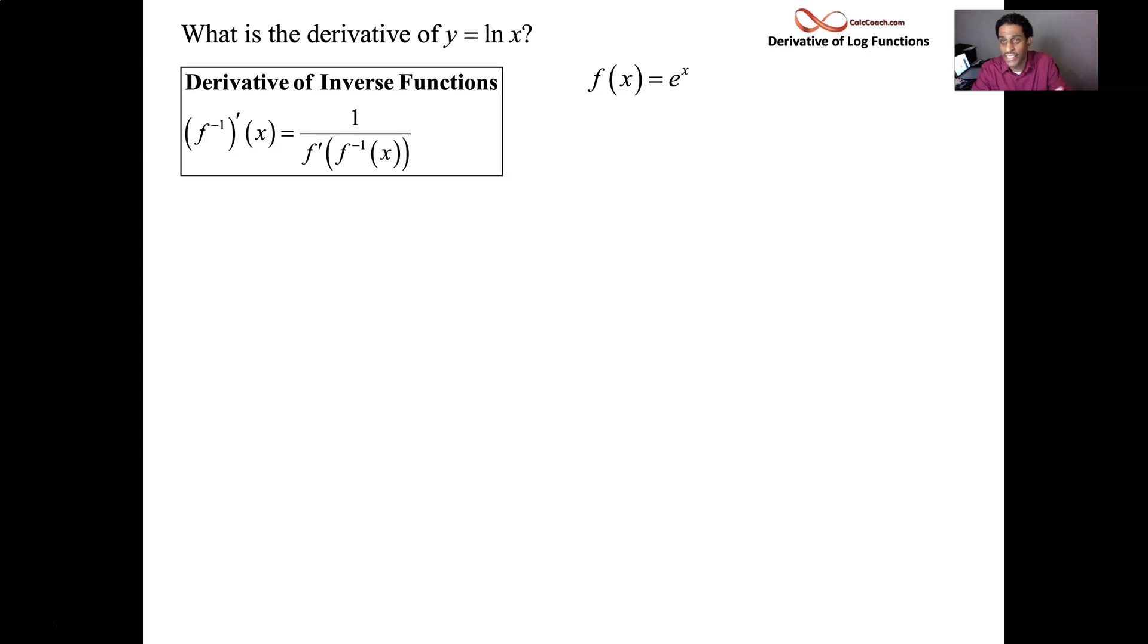This formula says the derivative of natural log of x can be found by taking 1 over the derivative of e to the x, evaluated at the natural log of x. The f in this inverse function derivative statement is e, and the inverse is log.